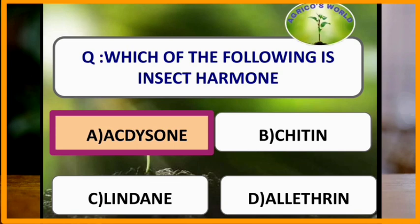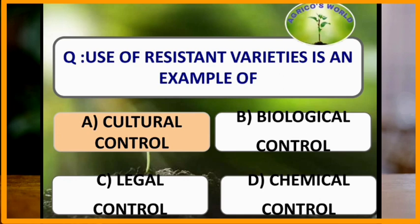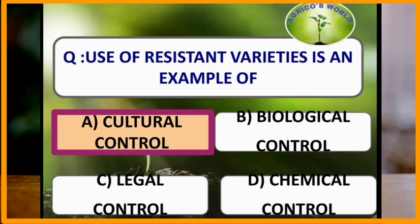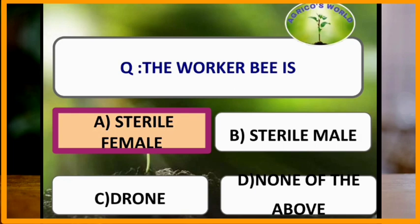Use of resistant varieties is an example of cultural control. The worker bee is a sterile female, whereas a fertile female is a queen.